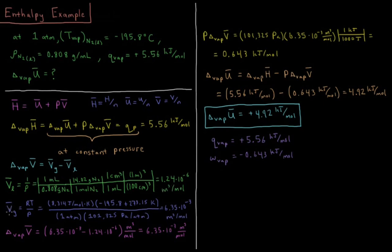The molar volume of the gas we get from the ideal gas law, P V bar equals RT. So V bar equals RT over P. We have 8.314 joules per mole Kelvin for R. The temperature we need to convert into Kelvin. So minus 195.8 Celsius plus 273.15 gets us to Kelvin. Divided by a pressure of 1 atmosphere, which is 101,325 pascals per atmosphere. If we're using R in joules per mole Kelvin, that's an SI unit, then we need to use pressure in SI units as well, which would be pascals. This gives us a molar volume of our gas of 6.35 times 10 to the minus 3 meters cubed per mole.